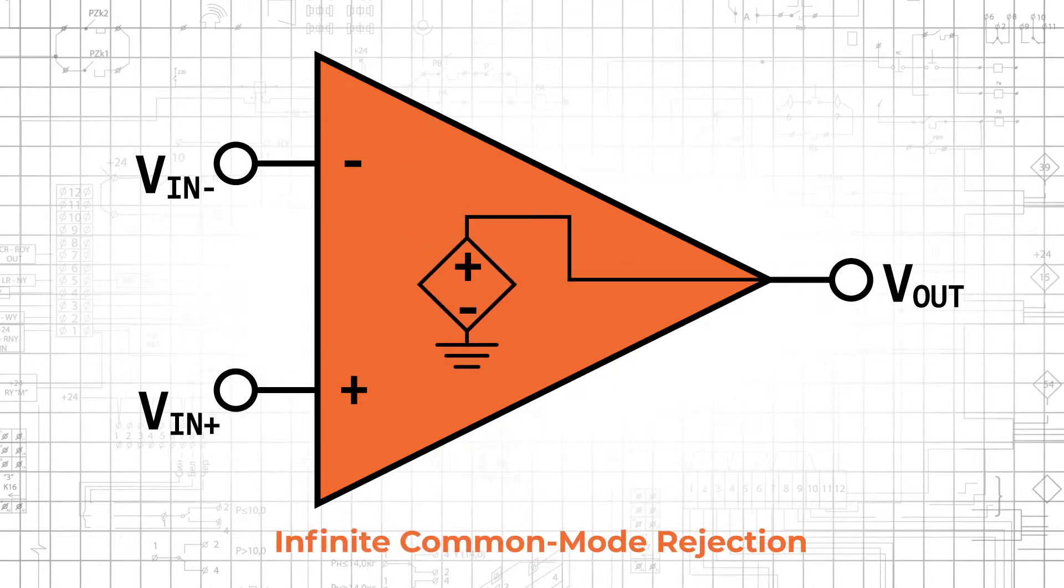Modeling the ideal op amp as a voltage controlled voltage source with a control voltage of VIN+ minus VIN- implies complete elimination of voltages that are present in both input signals. The only thing that affects the output amplitude is the difference between the two input amplitudes.